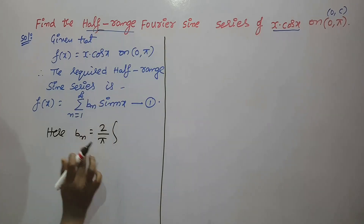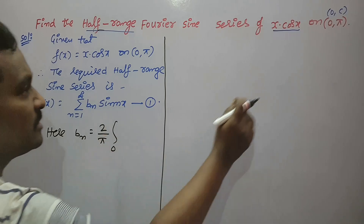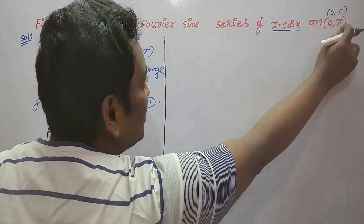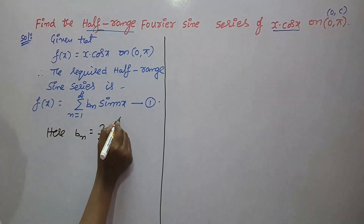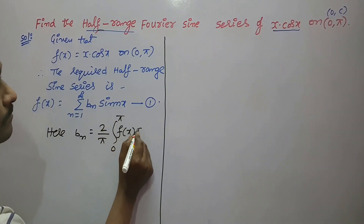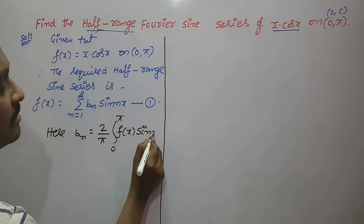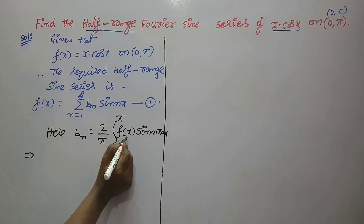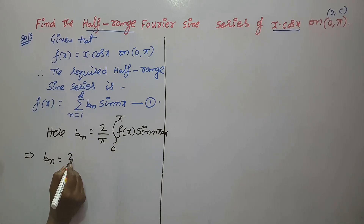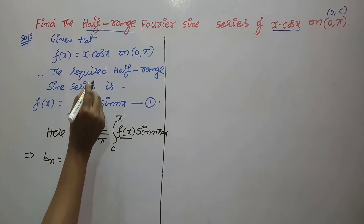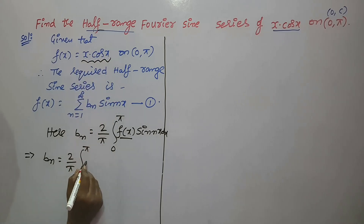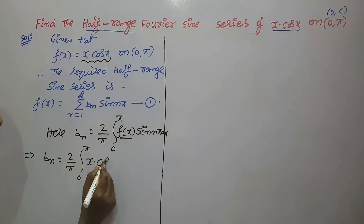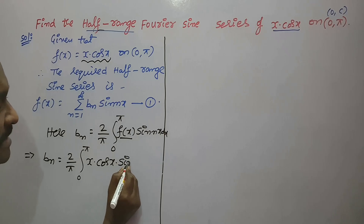The b_n value is (2/π) · integral from 0 to π — which are the endpoints of the given interval — of f(x) · sin(nx) dx. Now replace f(x) from the given function: the integral from 0 to π of x·cos(x) · sin(nx) dx.